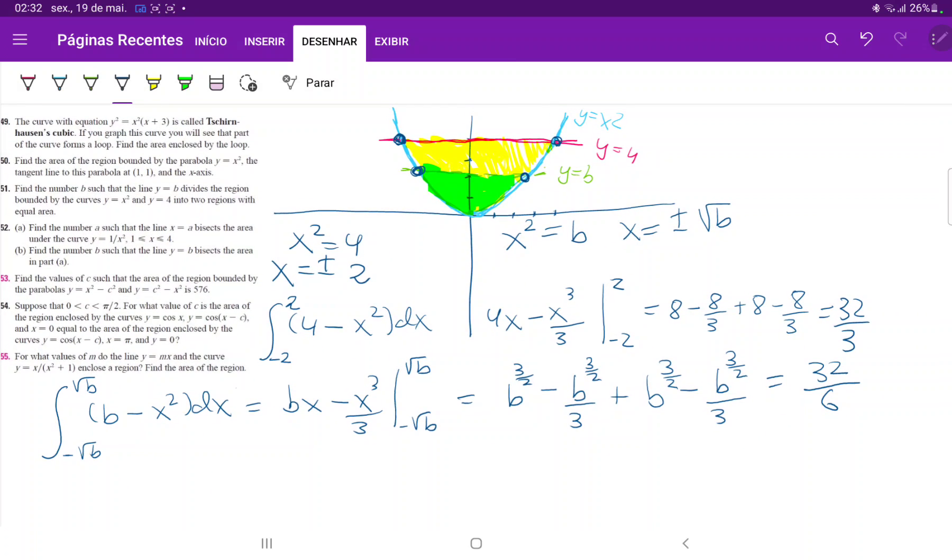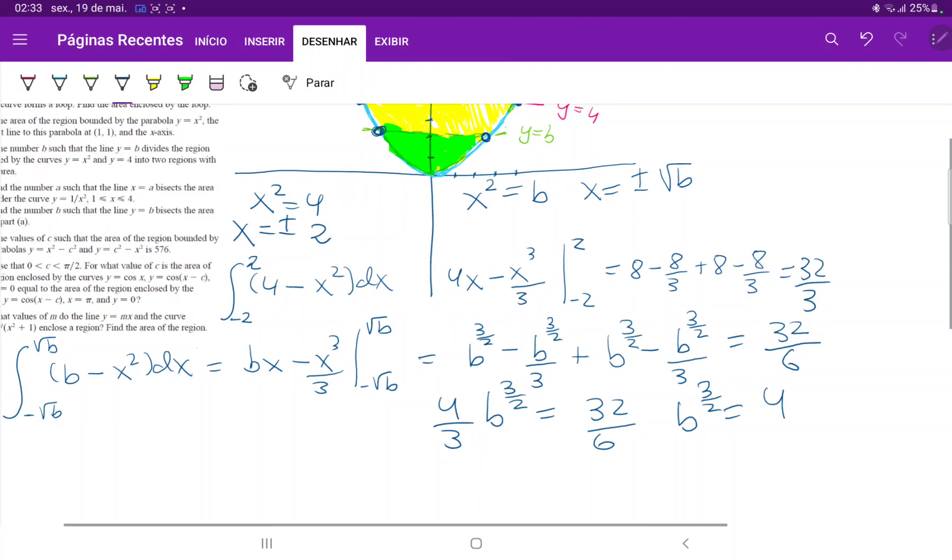Now let's clean this up. If we simplify this, this is 4 thirds b to the 3 halves equals 32 over 6. So b to the 3 halves equals 32 over 6 times 3 divided by 4, which is equal to 4. And therefore, b is equal to 4 to the power of 2 thirds.